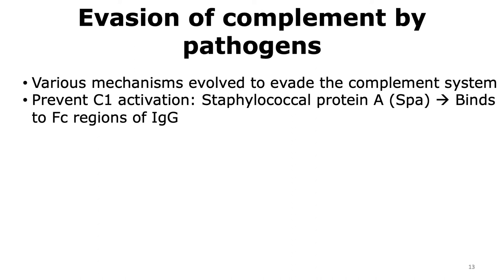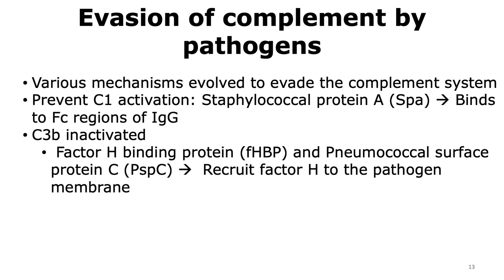Another way to deactivate the complement pathway is by inactivating C3B. Proteins like Factor H binding protein and pneumococcal surface protein C are able to recruit the complement regulatory protein Factor H to the membranes of the pathogen. By having Factor H closer to the membranes of the pathogen, the C3B deposited on the pathogen is cleaved by Factor I, and thereby the pathogen is protected.